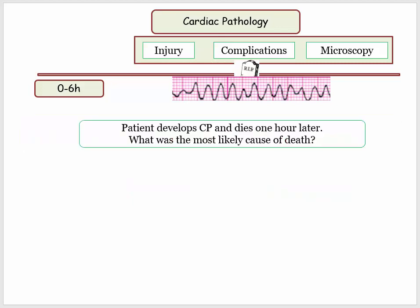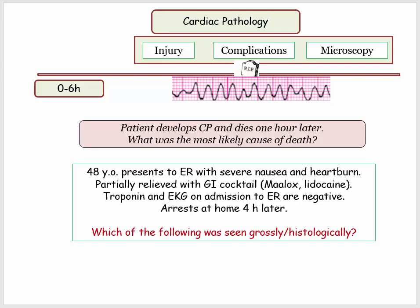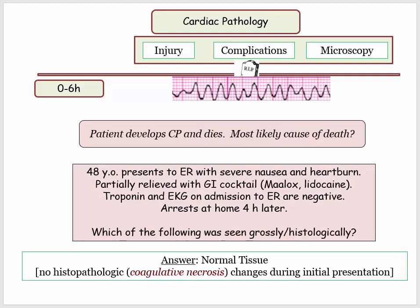What will the typical questions look like? Here's a simple one: patient develops chest pain and dies one hour later — what was the most likely cause of death? Answer: cardiac arrhythmia. What do we see grossly or on histology? Answer: normal tissue. During the zero to six hour time frame, there are no histopathologic changes noted. Thus, the focus on cardiac dysrhythmia as the derivative of choice.